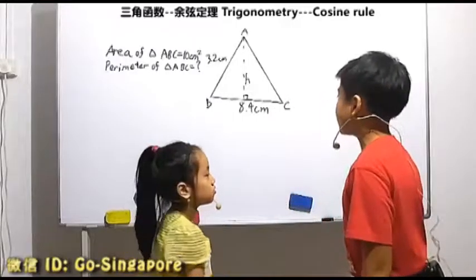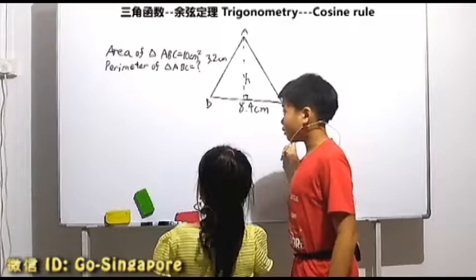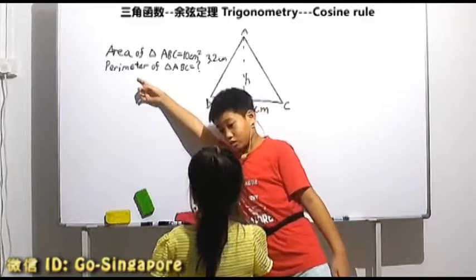Let's continue with trigonometry. This triangle, you'll find the perimeter.